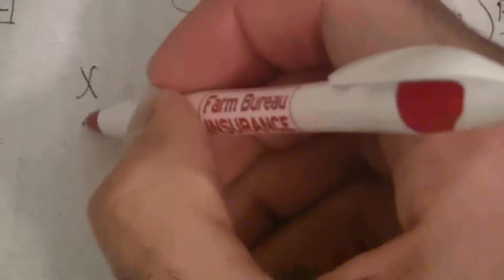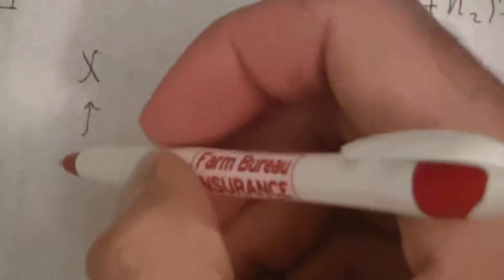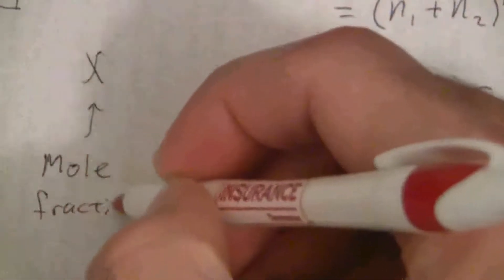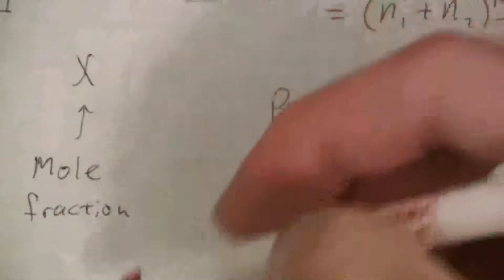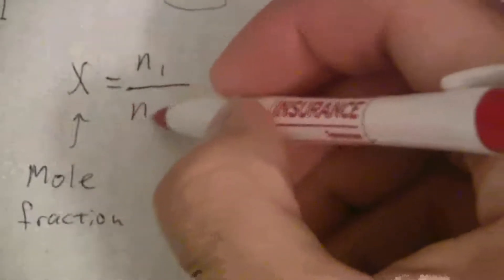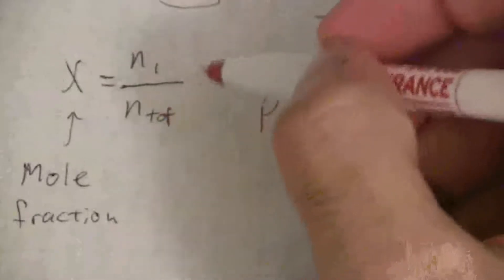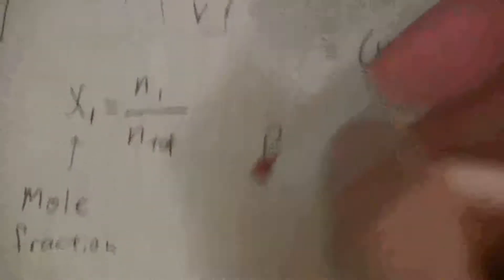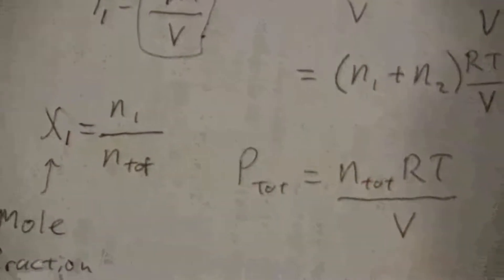The total number of moles is used in a value called the mole fraction, represented by the Greek letter chi. As the name implies, it's just a fraction of the moles — it's the moles of one substance out of the total number of moles. We don't multiply by 100 to make it a percent, that's why it's called a fraction. It's just a fraction: the part over the whole. This would be the mole fraction of the first component, and we can write the same for the second component.